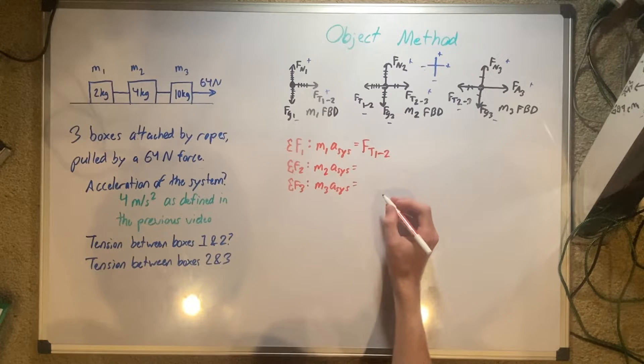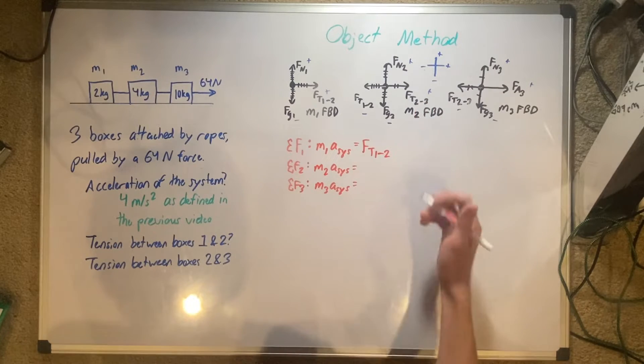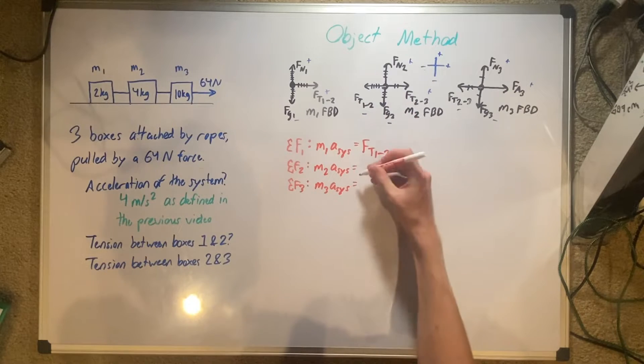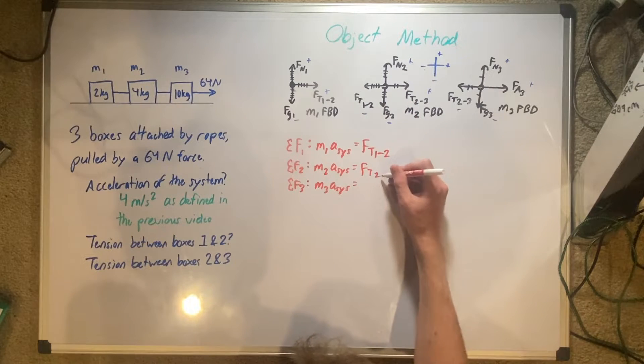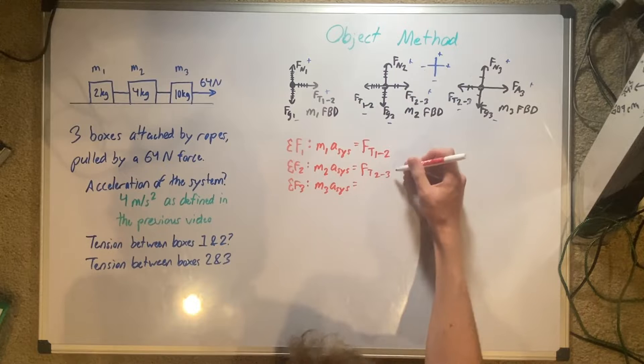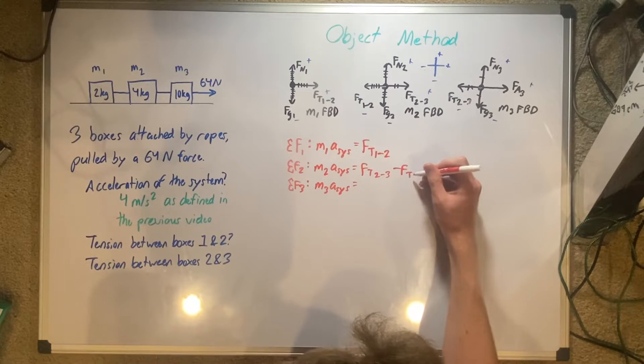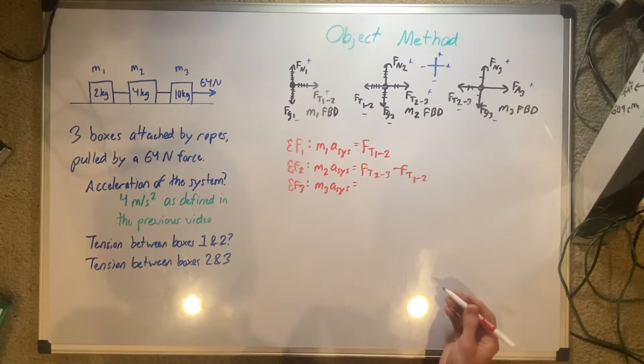Now that we have our positive and negative set, we have our force of tension, which is in the x direction, force of tension 2 to 3, minus, because this is the negative one, force of tension 1 to 2.